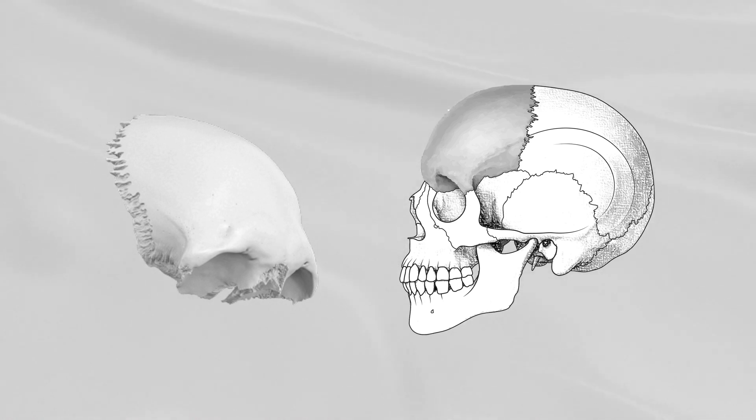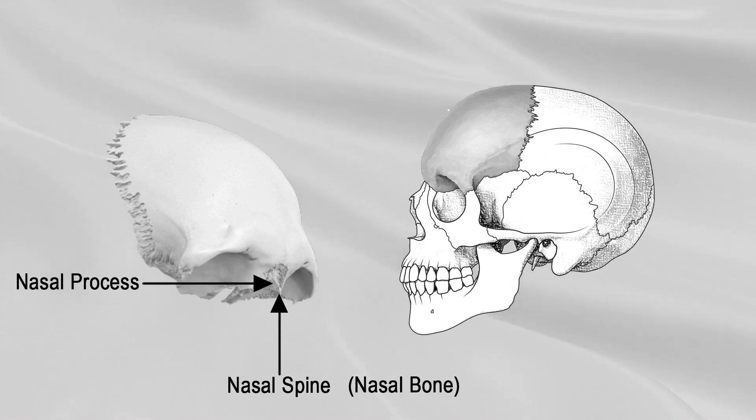Projecting downwards and forwards from the center of the notch is the nasal process. It lies beneath the nasal bones and supports the bridge of the nose. The nasal process ends below in a sharp spine, the nasal spine. It articulates in front with the crest of the nasal bones and behind with the perpendicular plate of the ethmoid.